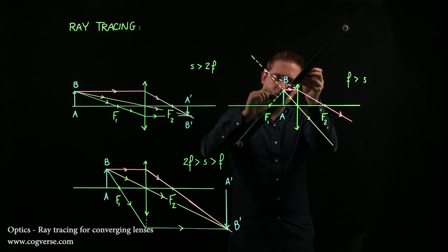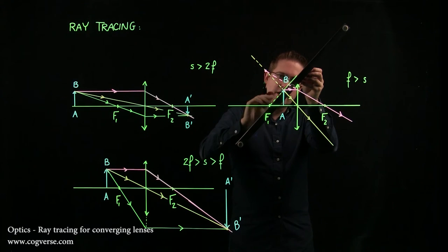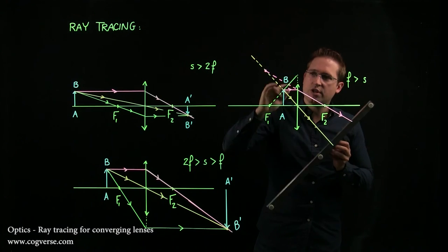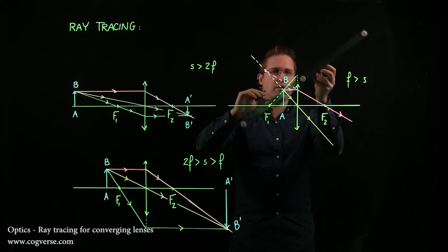It doesn't really start here. It starts at point B, but it's aligned with F1, and therefore has the right angle when it hits the lens to come out and be parallel.